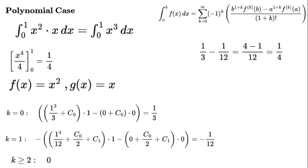For k greater than or equal to 2: 0, since g to the power of k equals 0. Sum: 1 over 3 minus 1 over 12 equals (4 minus 1) over 12 equals 1 over 4. It matches perfectly. The series stops because g's derivatives vanish.